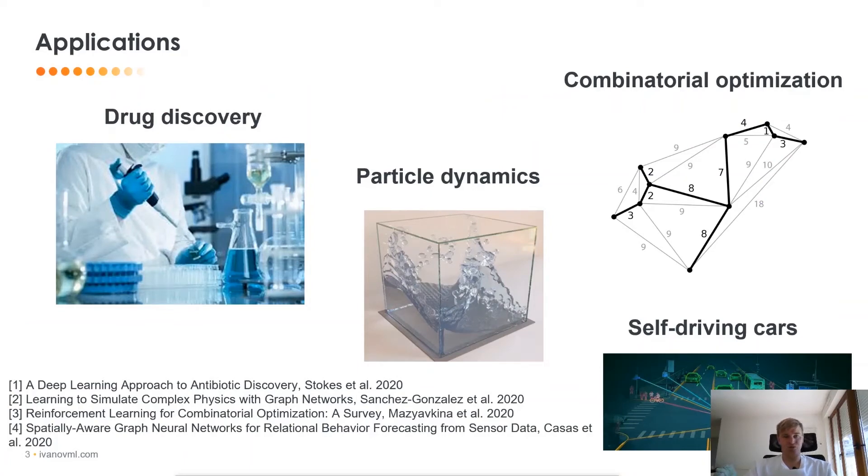Now, let's talk about applications or some success stories of graph neural networks in the last years. First of all, we have seen that we can apply GNN to develop new drugs, new medicine, and new antibiotics.